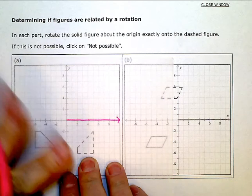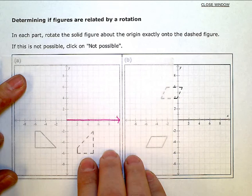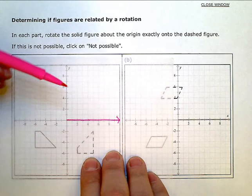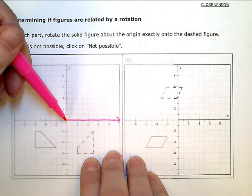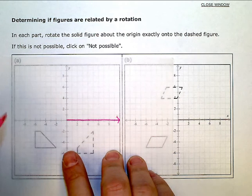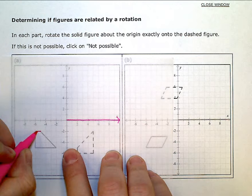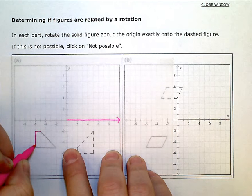Since I'm not in ALEKS using their rotating tool, I'm going to do it the old-fashioned way with tracing paper. I want to know if I can rotate this figure, so I'm going to trace the solid one.